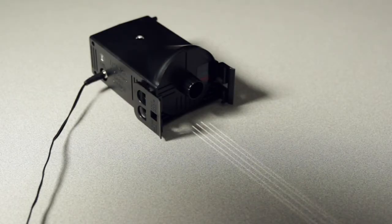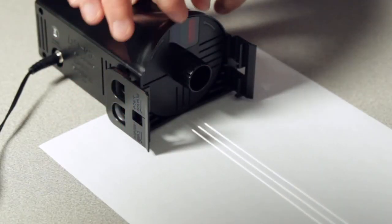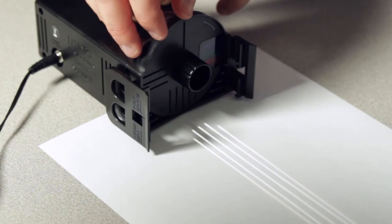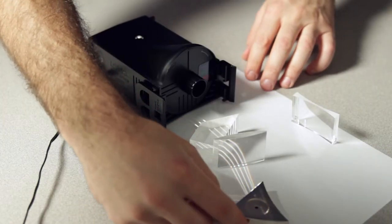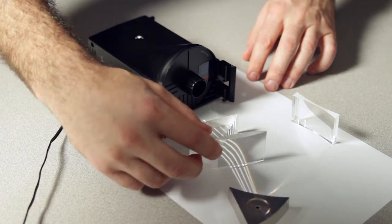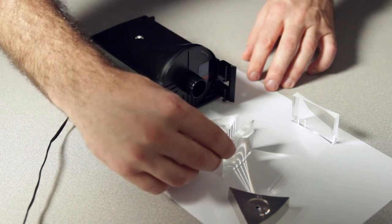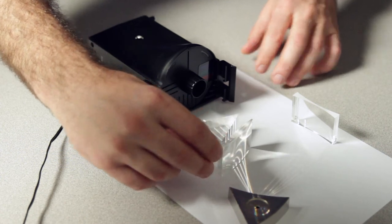To use the light source as a ray box, place the unit flat on a tabletop. Turn the wheel to select one, three, or five parallel rays projected onto the table. A sheet of white paper placed flat on the table makes the rays easier to see and allows you to trace them with a pencil. Use prisms, mirrors, and cylindrical lenses to study how light rays are refracted and reflected.